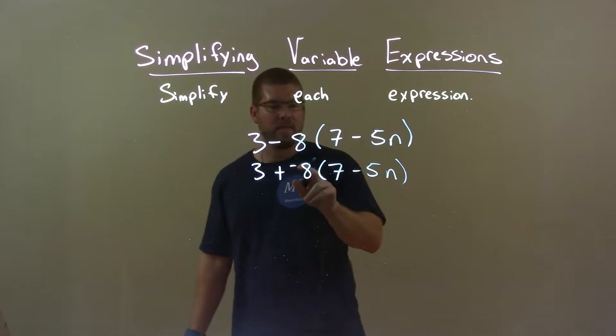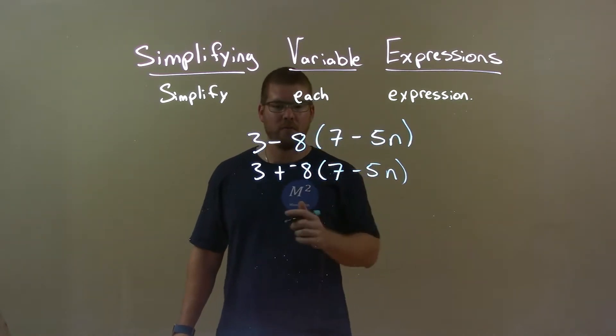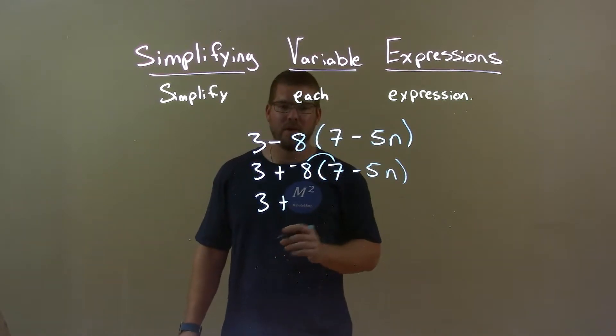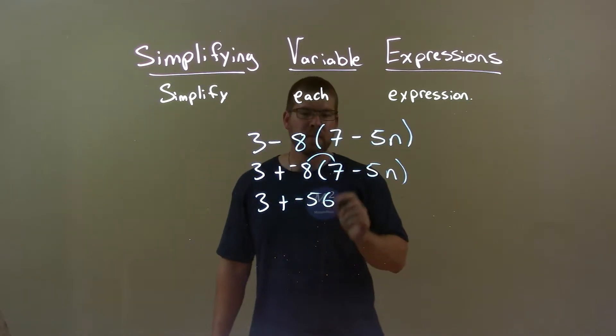Okay, now we have to multiply this negative 8 into the parenthesis to both parts. Don't forget it goes to both. So we have 3 plus negative 8 times 7 is a negative 56. Okay?